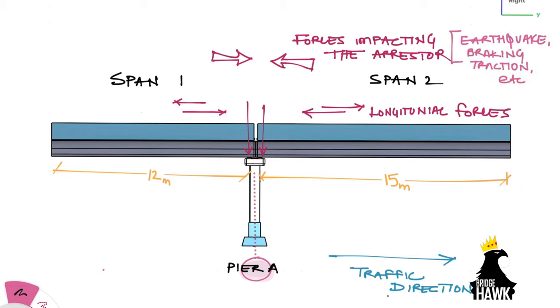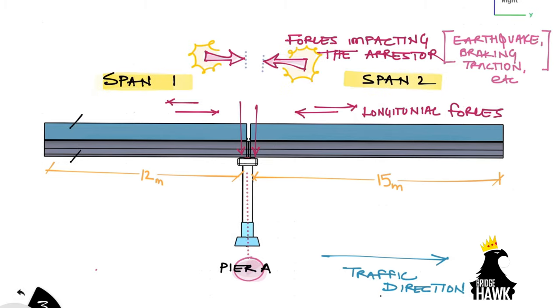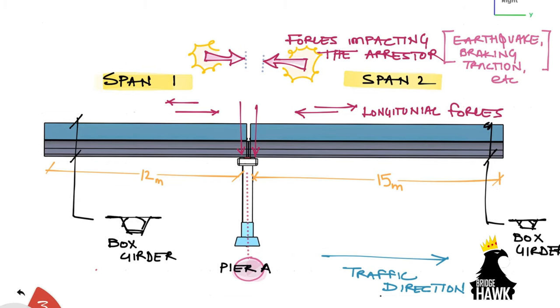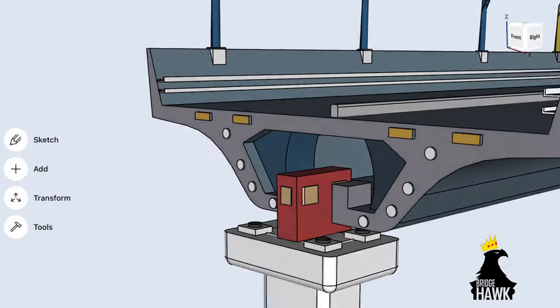The transverse forces are those due to earthquake forces, wind effects, etc. These spans are pre-stressed box girders. Seismic arresters are sandwiched between two girders and made to absorb the impact of the longitudinal and transverse forces from both spans.